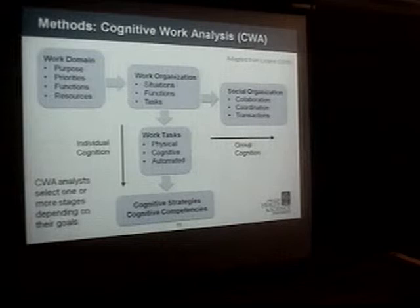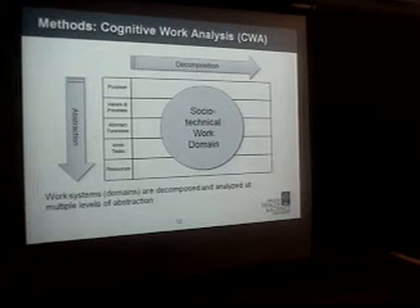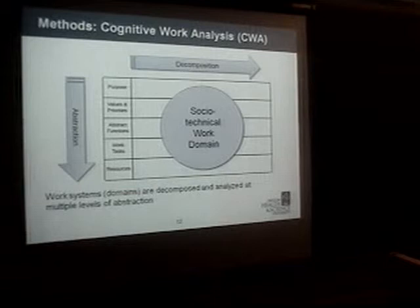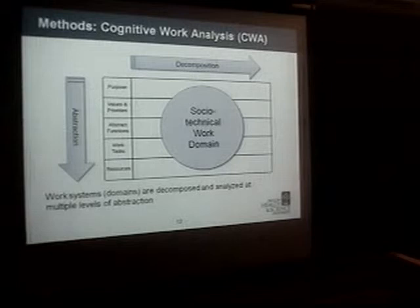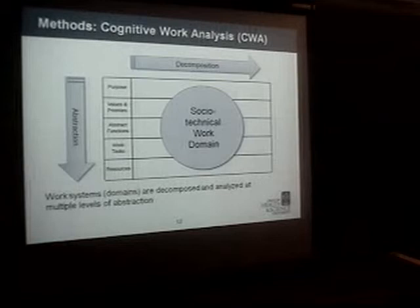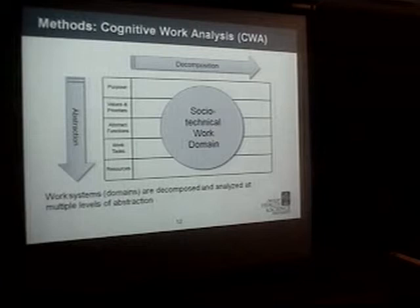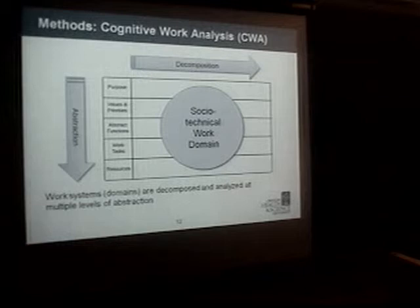I also looked at how electronic information coming into practices is handled. Finally, we look at individual strategies or cognitive pathways that individuals or teams could use to get the work done. Cognitive work analysis looks at the purpose for the domain — why this work system exists, what values and priorities shape the work, what is the work in abstract and specific terms, and at the lowest level of abstraction, the physical resources and types of information that support the upper levels.